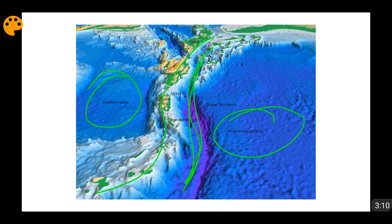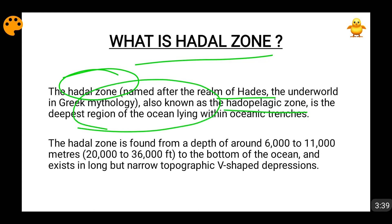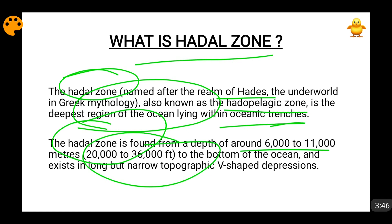A chain of volcanoes forms at the ocean surface because of this subduction. Parallel to the oceanic trenches you are going to find mountain ranges and volcanic arcs. The Hadal Zone is also known as the Hadropelagic Zone — it is the deepest region of the ocean, lying within the oceanic trenches at a depth of 6000 to 11000 meters, which is 20000 to 36000 feet. These trenches exist as long but narrow topographic V-shaped depressions.